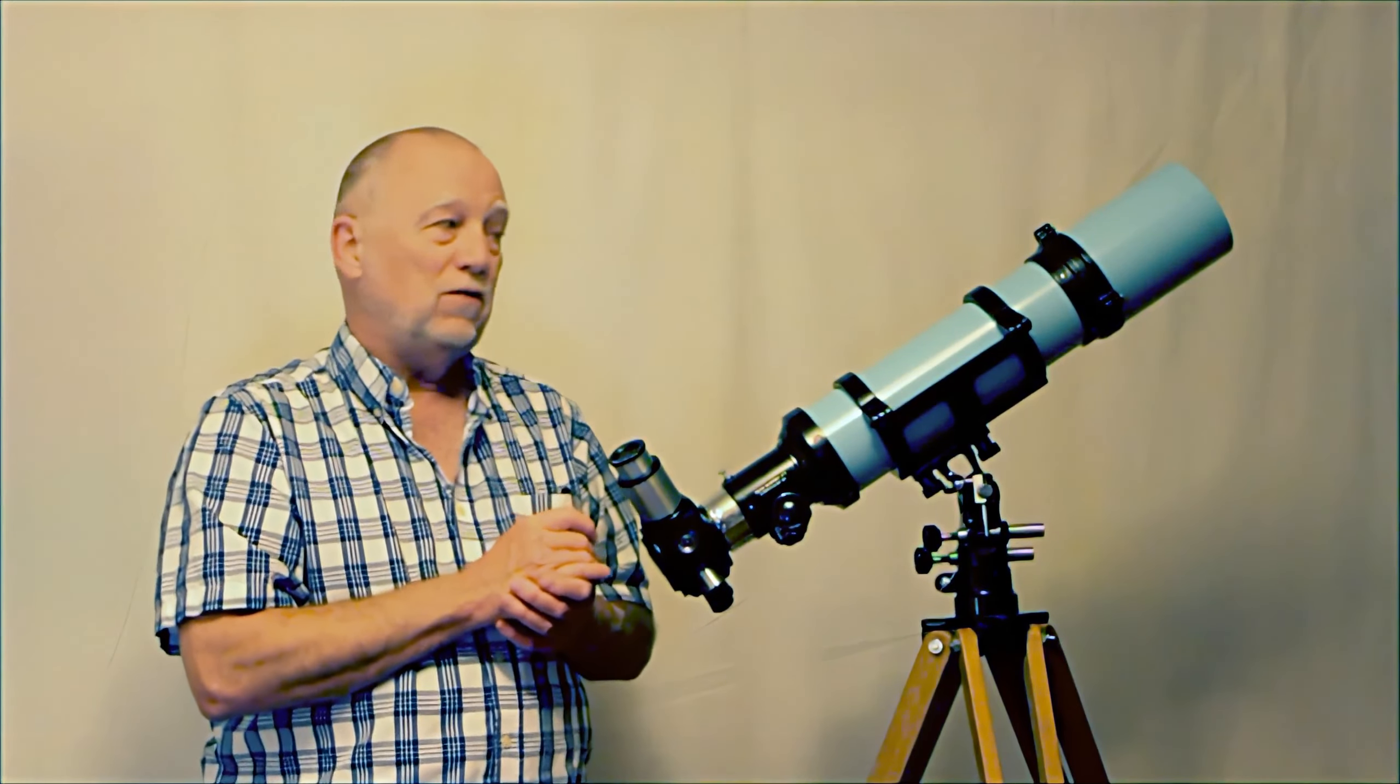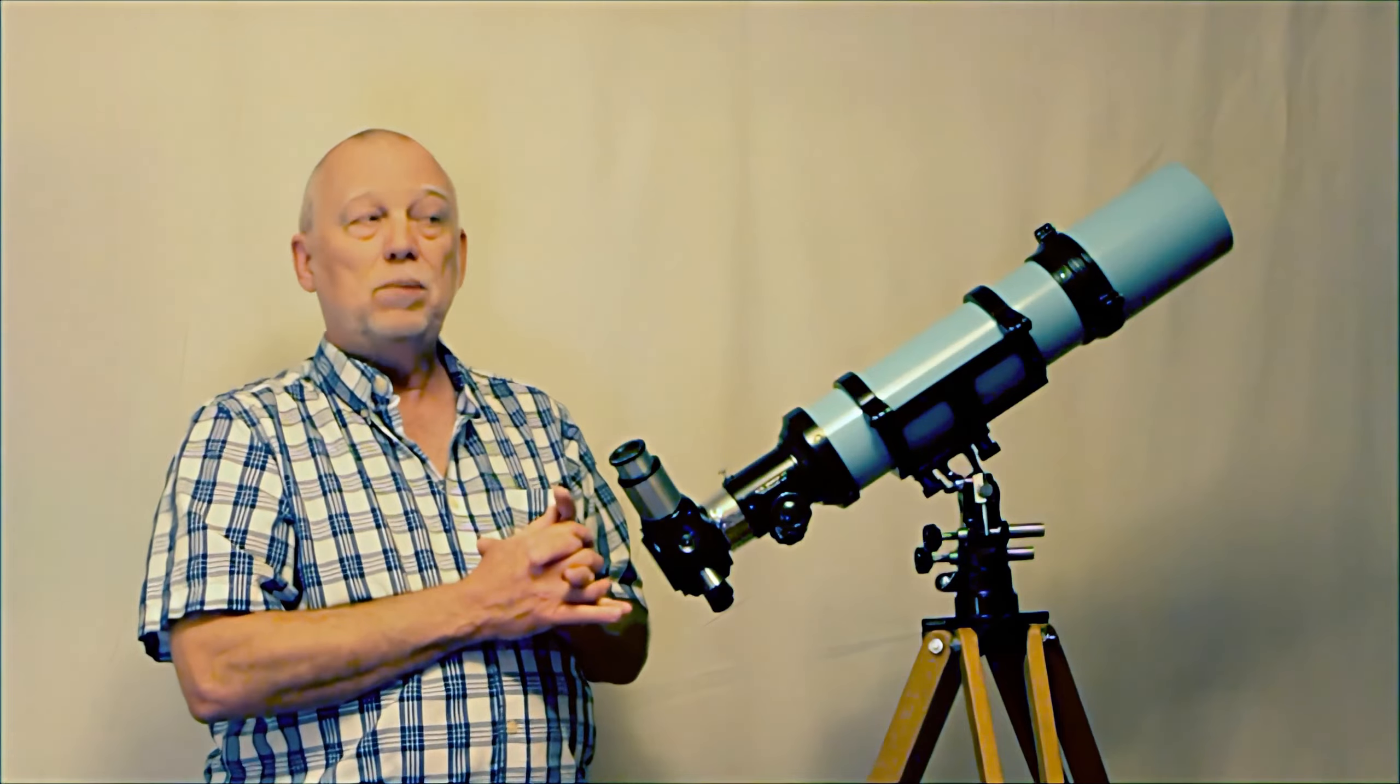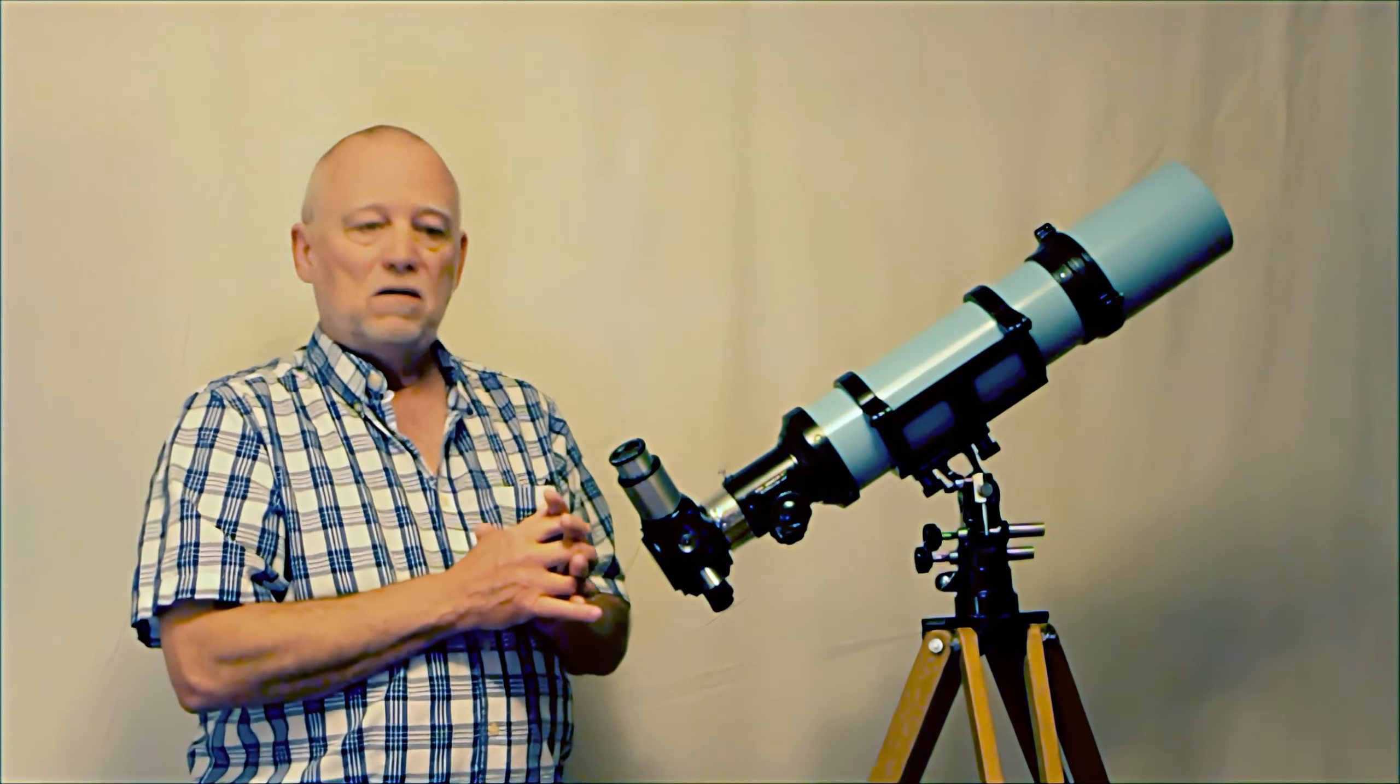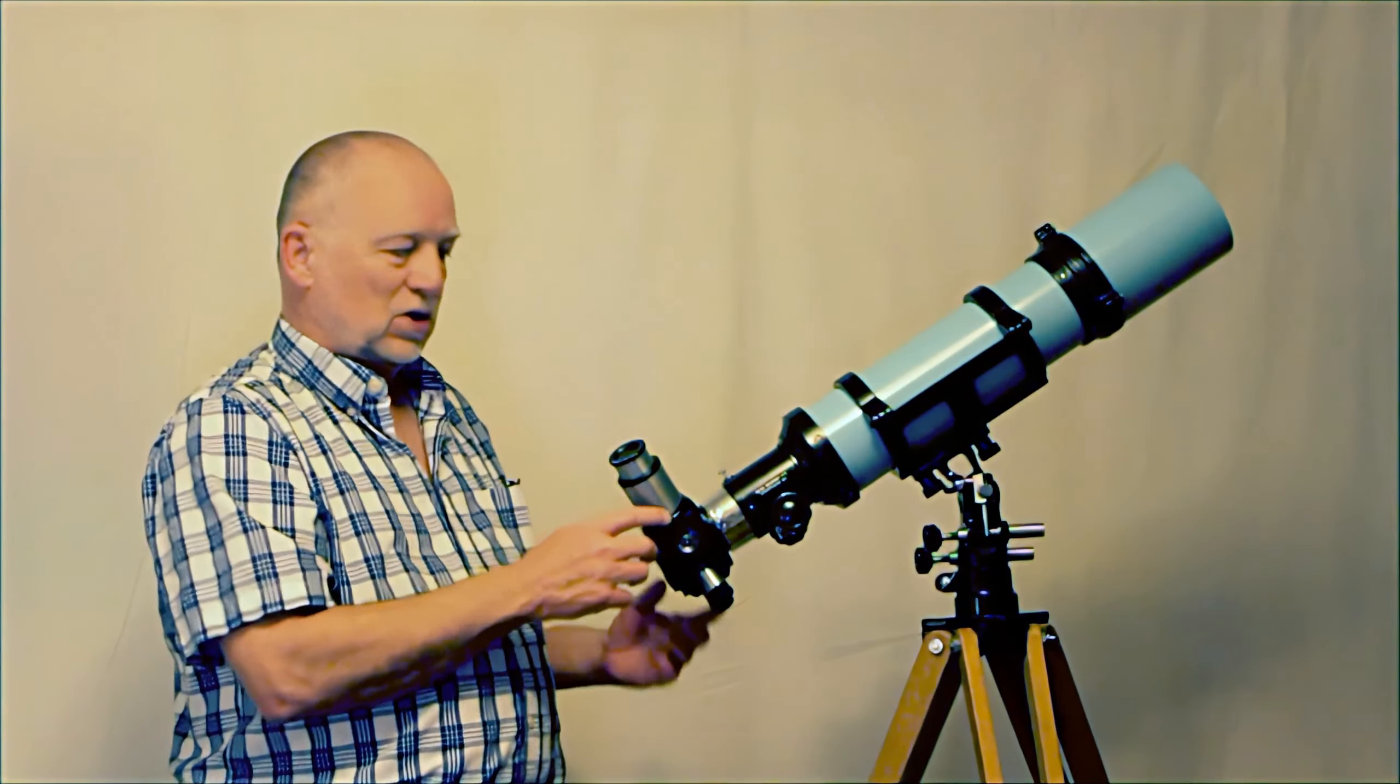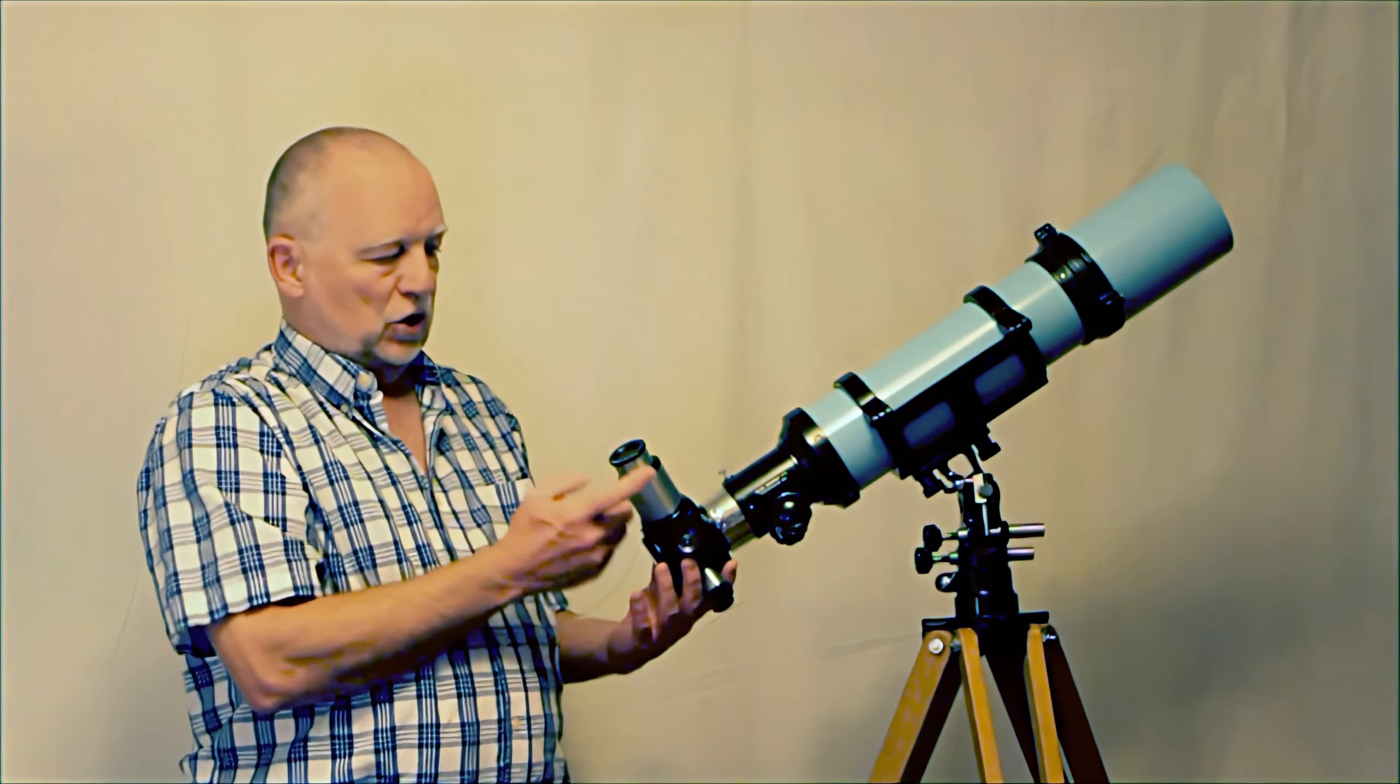As a matter of fact, the Vernonscope folks didn't even supply a finder with this. I believe their argument was that it really didn't need one. And that's a pretty sound argument. You certainly don't need a finder if you use a long focal length eyepiece. Now, with the Super Unihex, of course, it's very nice because you can rotate the Super Unihex and get a different magnification.